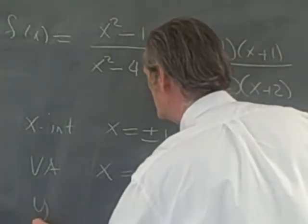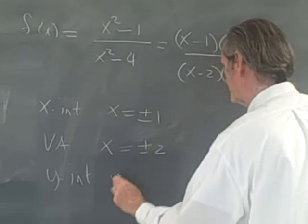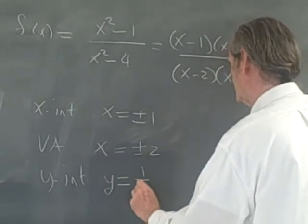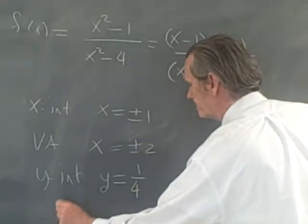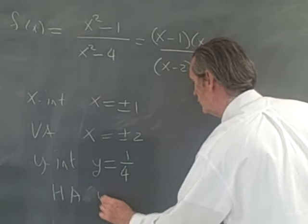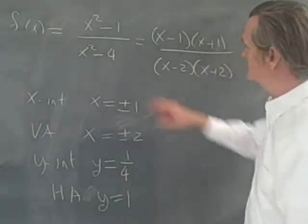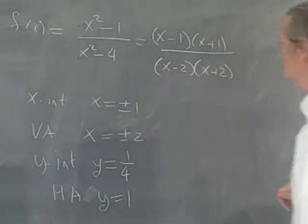The y-intercept will be equal to 1 over negative 4. And the horizontal asymptote will be the line y equals 1. The horizontal asymptote is just the ratio of the coefficients of the highest degree terms.